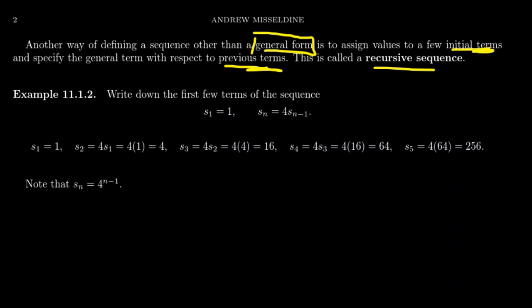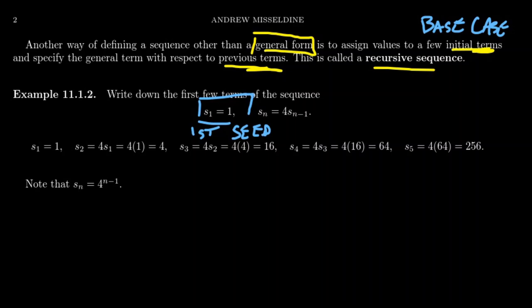The initial term is sometimes referred to as a base case, and there might have to be more than one. In this situation, there'll just be one. So we take a base case: S1 equals one. This is the first term in our sequence — sometimes called a seed, because this is where the plant grows from. The first term is one, and then subsequent terms follow our recursive relation.